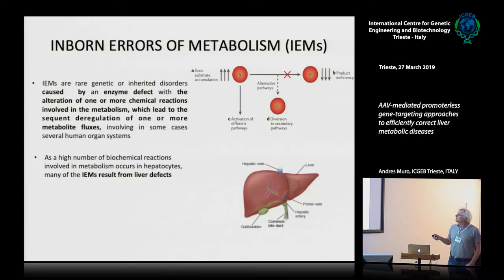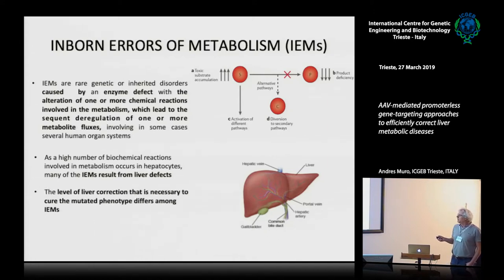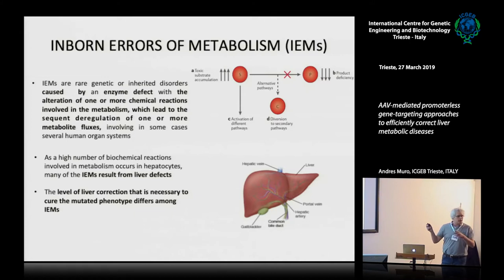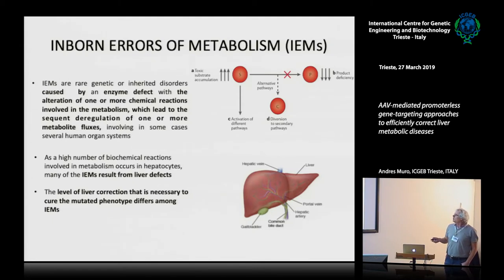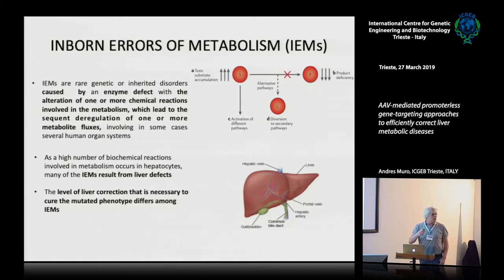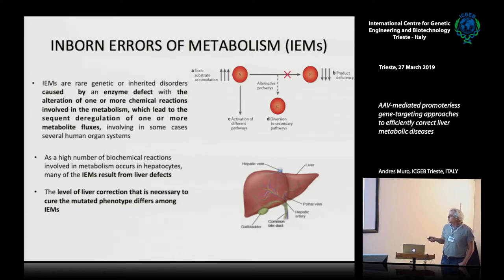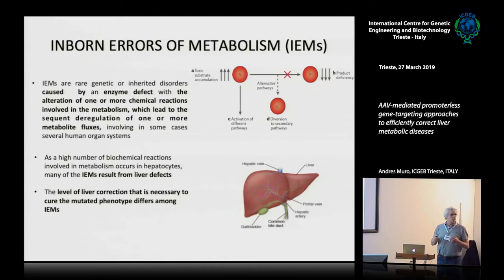Many of these processes occur in the liver, and this is what we are going to see today. The liver is an important organ that takes care of many metabolic pathways, and as such there are many diseases that affect the liver. Importantly, these metabolic processes are normally in excess — we don't need 100% of enzyme activity to be healthy. In many cases, you need only 2, 5, 10, or 20%, depending on the pathway, just to have a normal metabolic process.